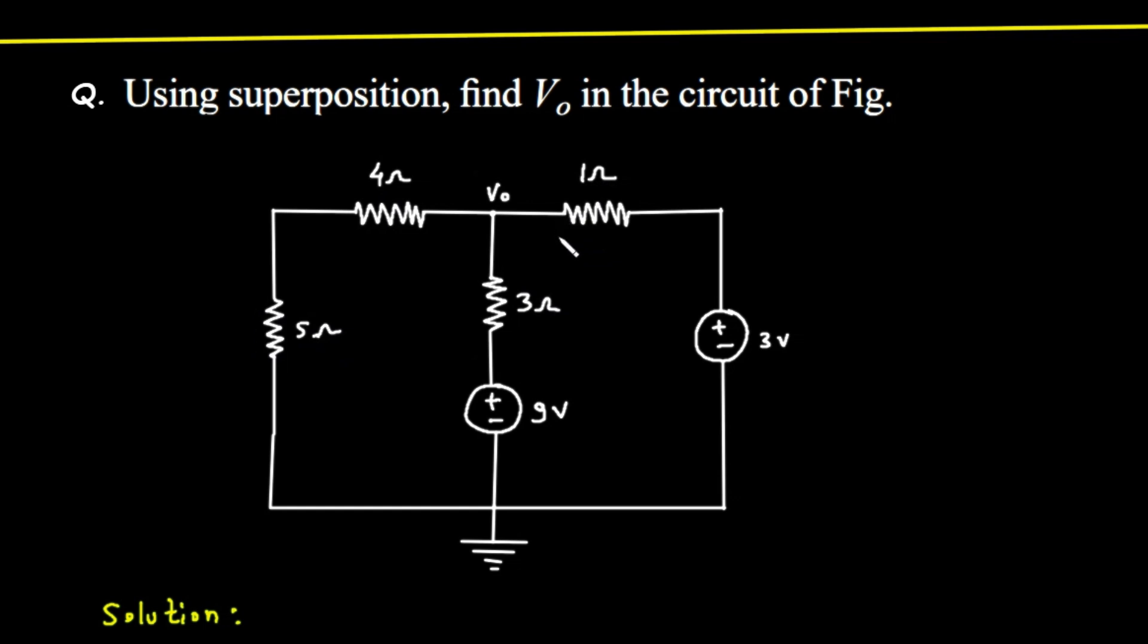We also have two power sources, specifically, two independent voltage sources. One is a 9-volt source in the middle, and the other is a 3-volt source on the right. Our mission is to find the voltage V0 at the central node, which is the point where the 4 ohm, 1 ohm, and 3 ohm resistors all connect. The problem asks us to use the superposition theorem. So, what is that?